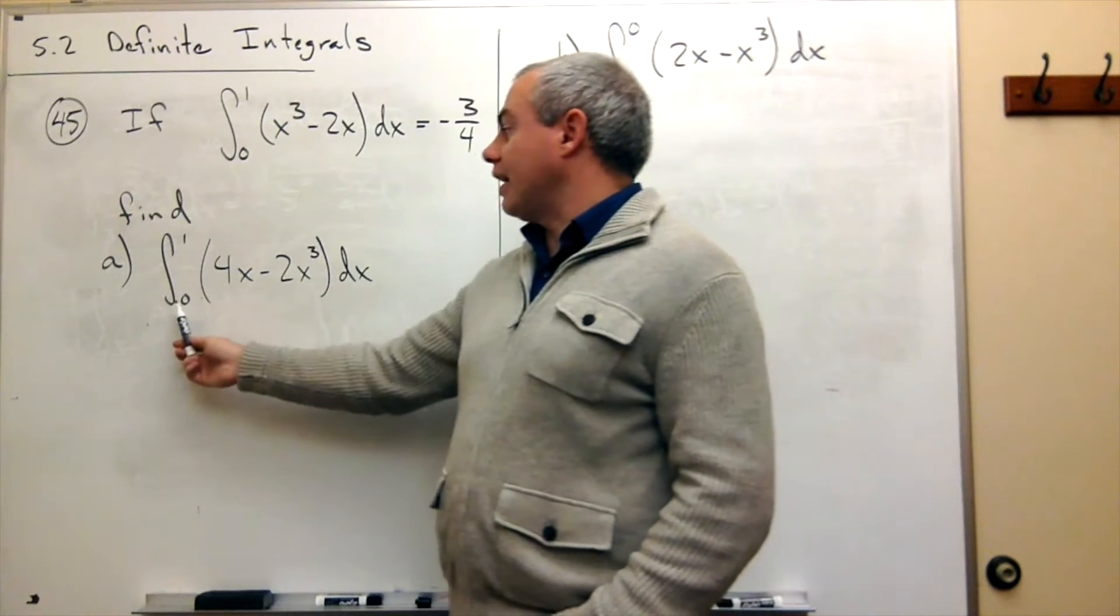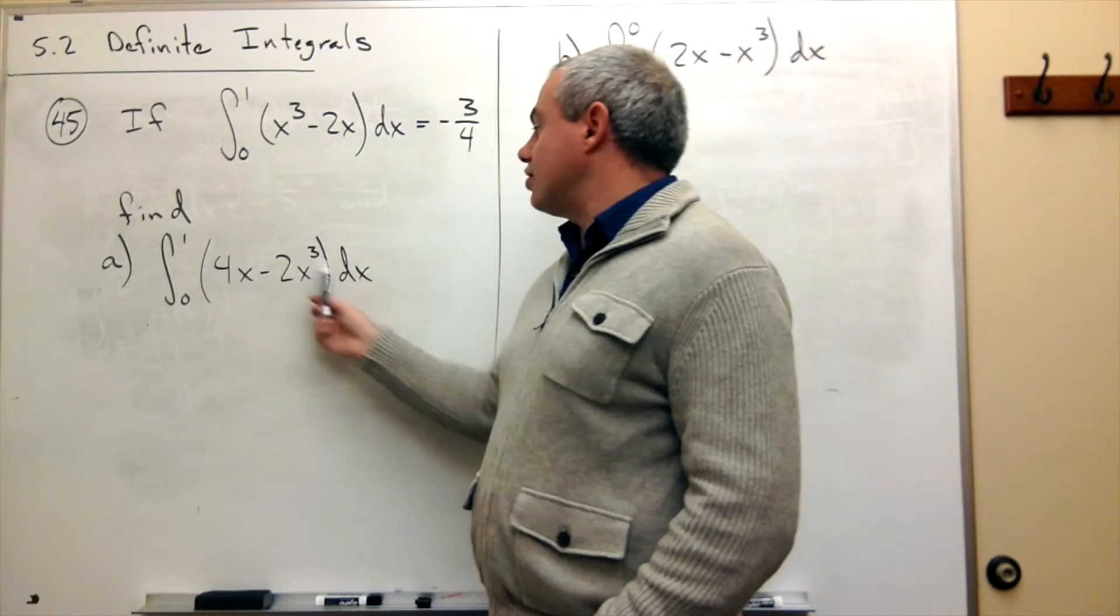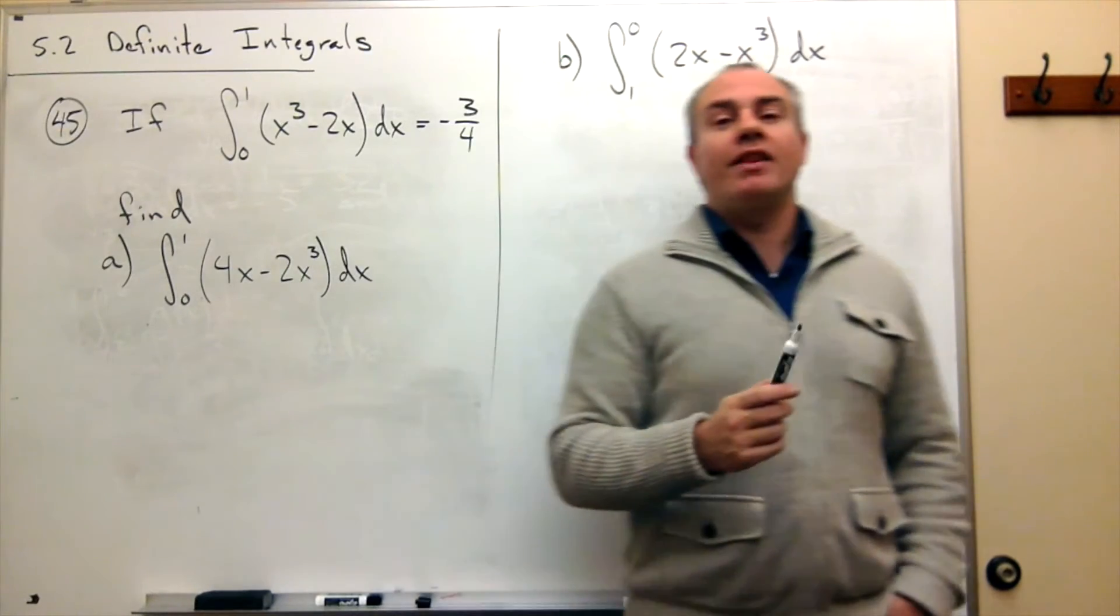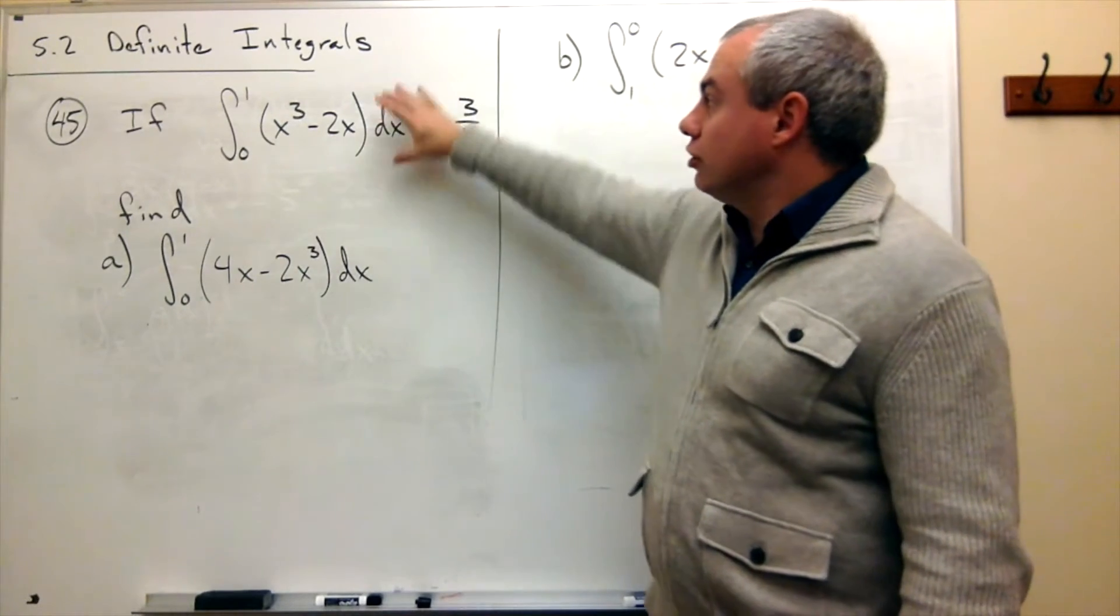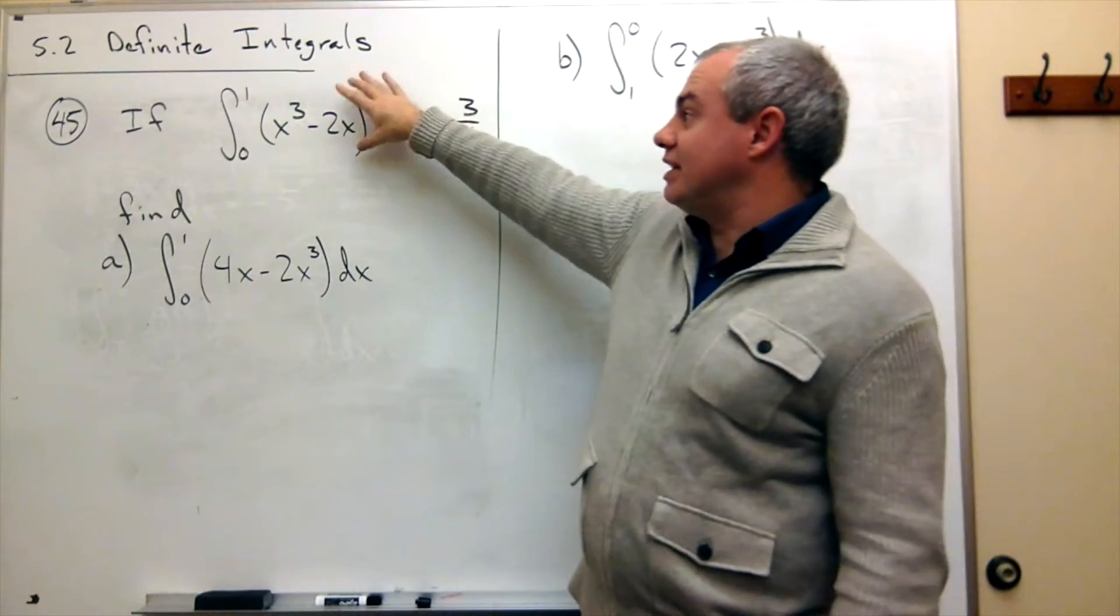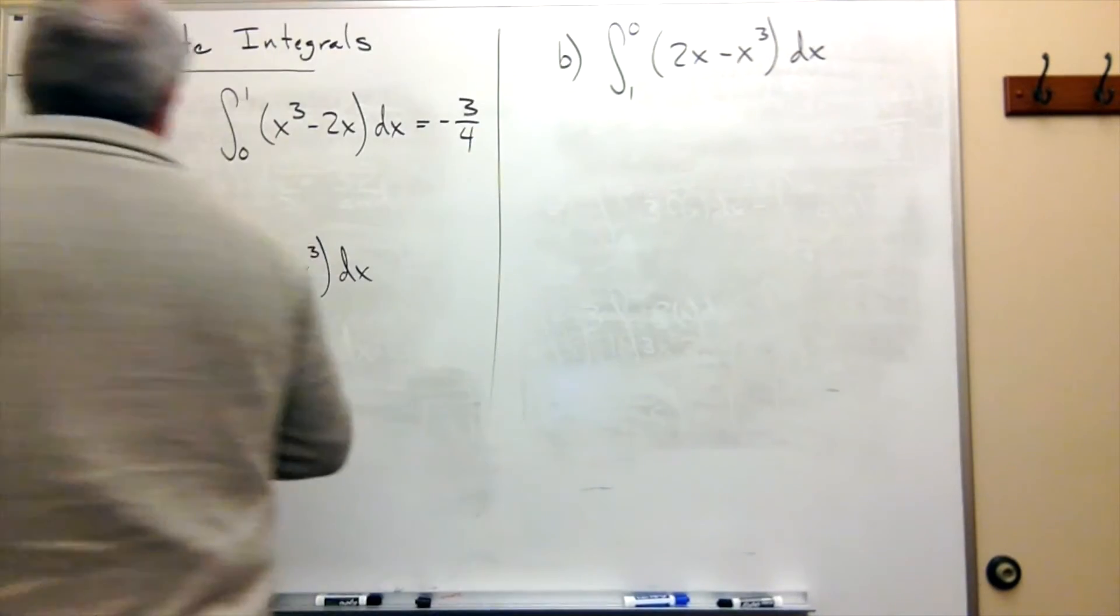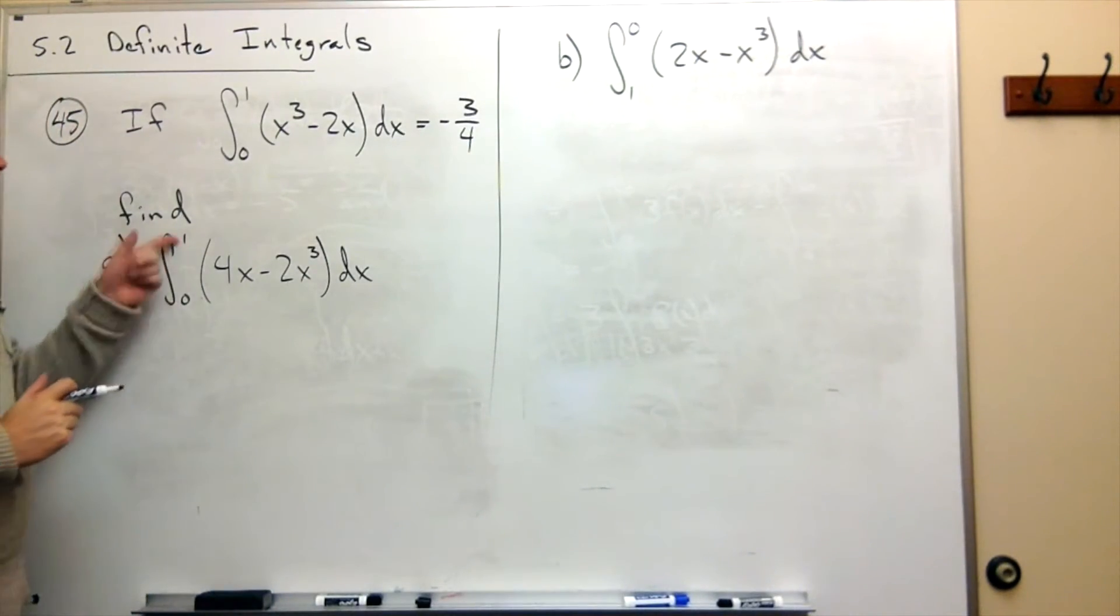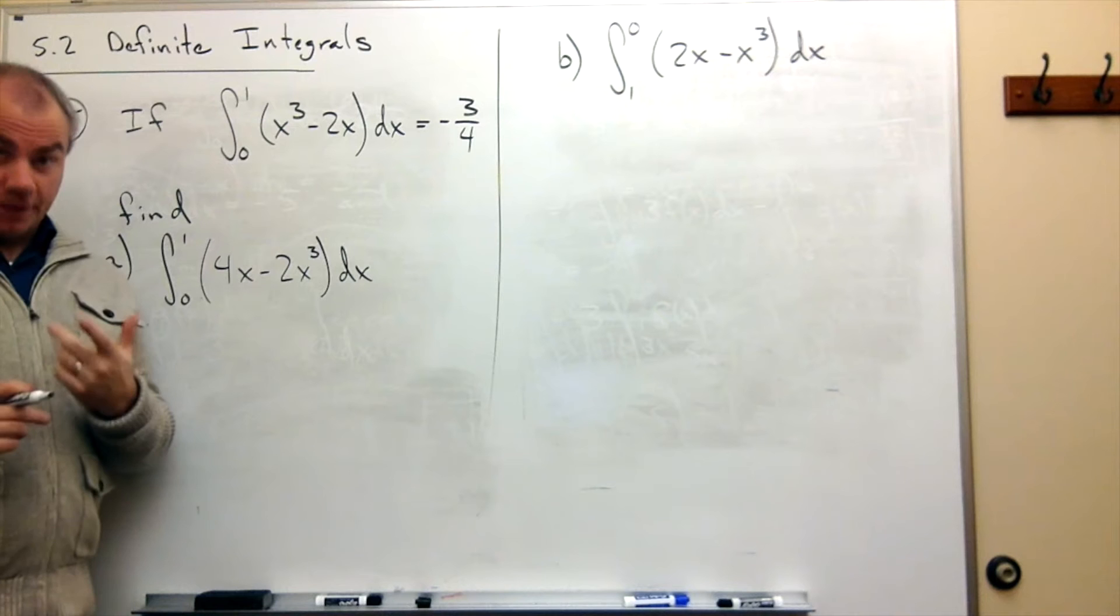The first one is the integral from 0 to 1 of 4x minus 2x cubed dx. And the way that we're going to do this is we're going to manipulate this thing to look like this guy, and then use this information to find the definite integral. So notice that it's already okay on the limits. The limits here are from 0 to 1, and the limits here are from 0 to 1, so we're okay on our limits of integration.